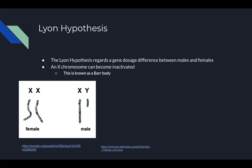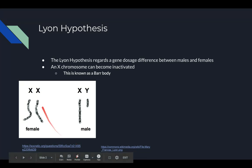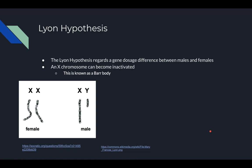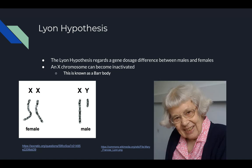The Lyon hypothesis regards the differences in gene dosages between males and females. A female has two X chromosomes while a male only has one, which results in one of the two becoming inactivated in a female. The inactivated chromosome will condense and become what is known as a Barr body. This is the founder of the hypothesis, Mary Frances Lyon.